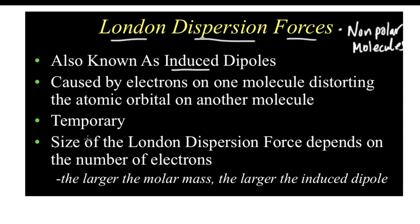London dispersion forces are temporary forces — they're not there all the time. The size of the force really depends on the number of electrons. The more electrons a molecule has, the stronger the London dispersion force. A quick way to determine which molecule has more electrons is to figure out which one has a larger molar mass, because a larger molar mass means more protons and therefore more electrons, and therefore a stronger induced dipole due to more electrons causing distortion in the electron orbitals.